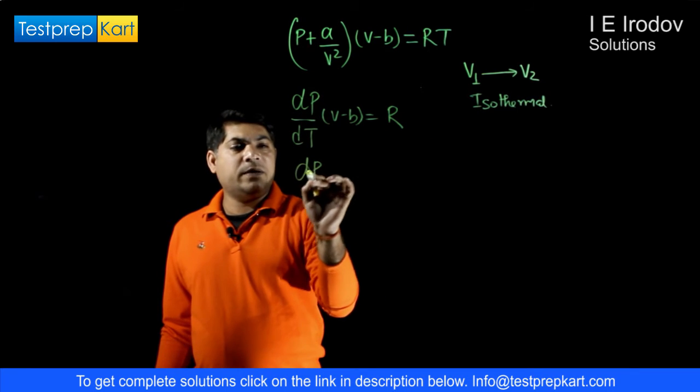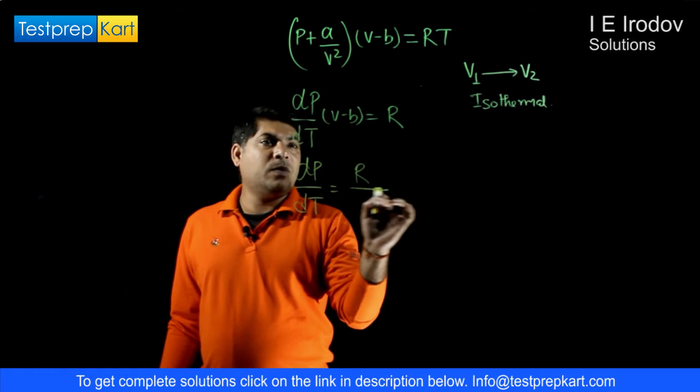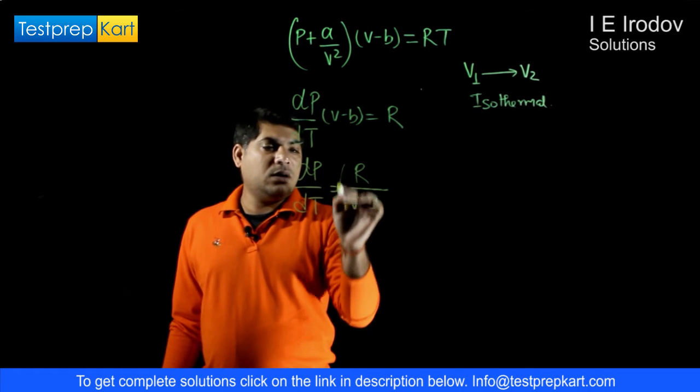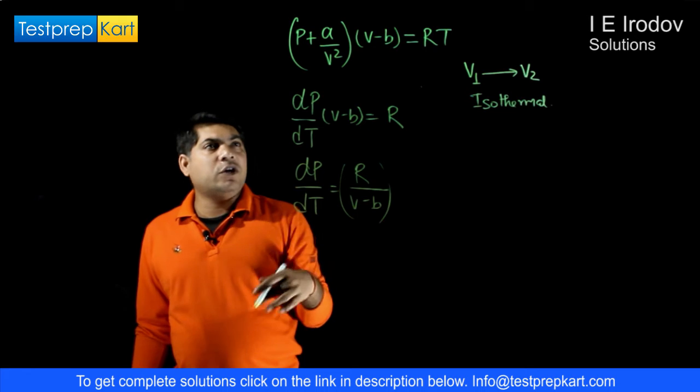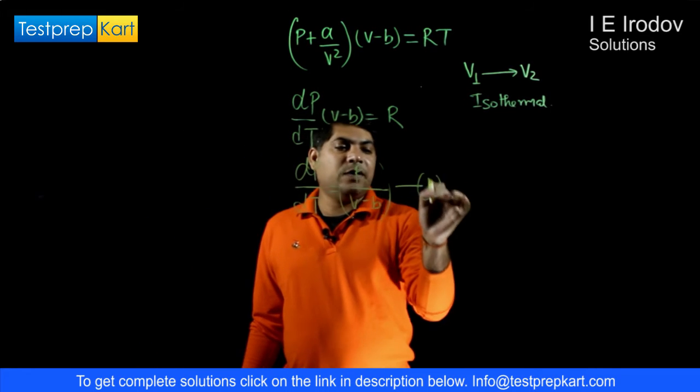So from here we will get dP/dT equals R/(V - b). This is for constant volume, of course we are taking V as a constant. So this is our first finding.